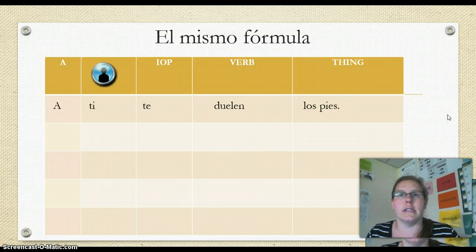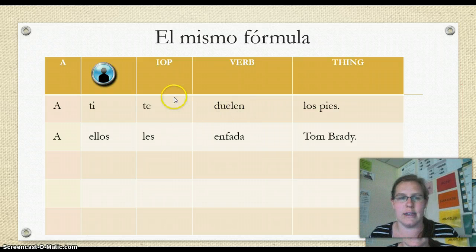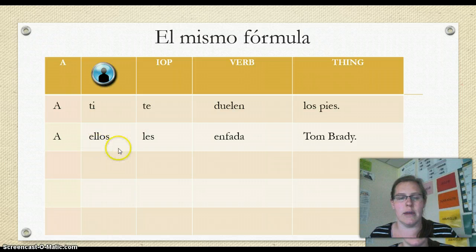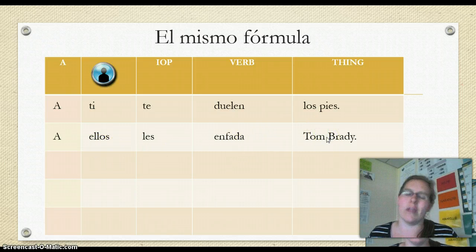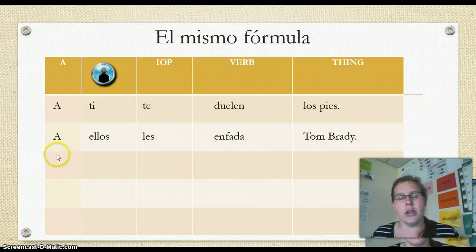Another example: 'A ellos les enfada Tom Brady.' Tom Brady just makes them crazy. We have 'a' plus our person, ellos, then the correct indirect object pronoun that matches them, then our verb conjugated for the thing — or in this case the person — who is making them extremely angry. It's the same formula, nothing new from what we learned with gustar-like verbs.